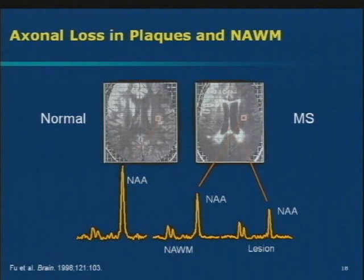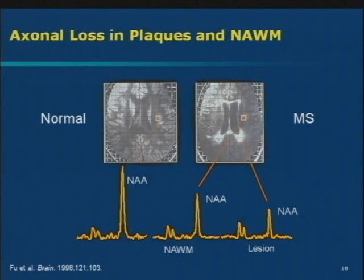Another way to look at it is an advanced MRI technique called spectroscopy, where we create a grid — a checkerboard over the brain. Within each square we can look at metabolites in that area of the brain. One of them, which we call NAA, is this tall peak present in normal axons without injury. But if they're damaged, that peak goes down, telling us that axons have been injured in that region. In the area of a lesion, you can see the NAA peak is way down. So we have a way of monitoring the level of axon injury by MRI.